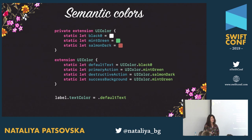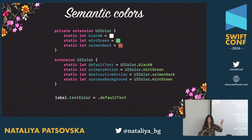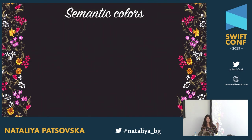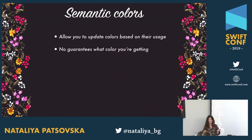The third common starting point is semantic colors. You have a palette, but instead of exposing it directly, you make it private and expose methods that give the intent of the color, not the name. This allows you to update colors based on usage. Because the API doesn't guarantee what kind of color it is, the implementation behind the scenes can switch it.